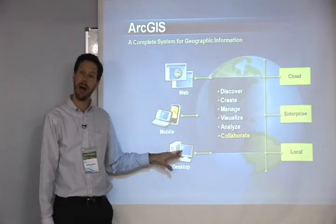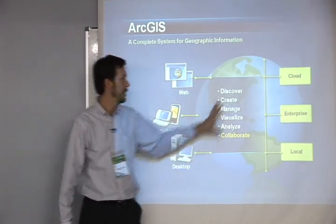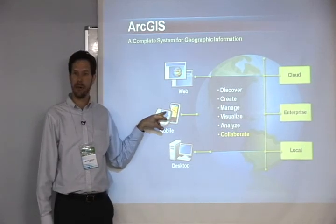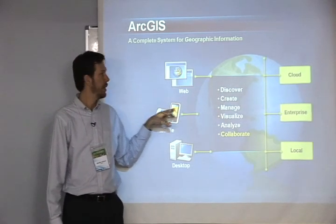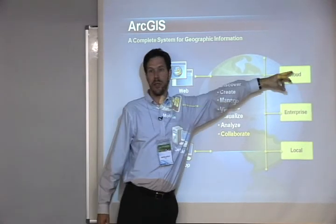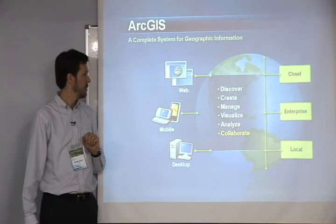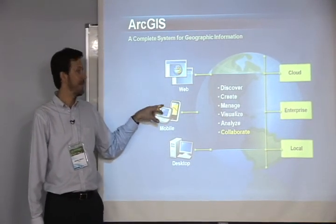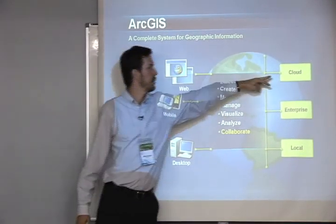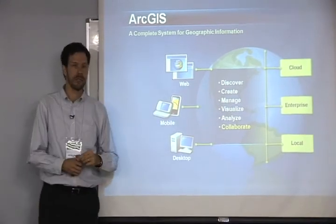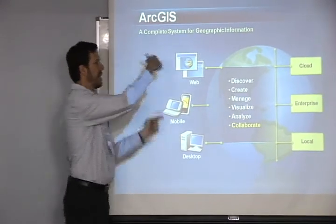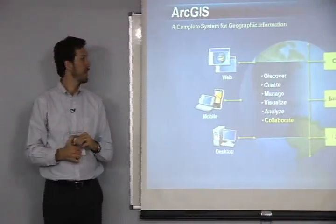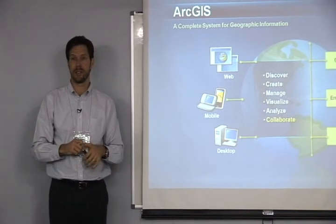We can publish our data to the cloud, and someone else immediately from their cell phone or their iPhone can get access to that data. Or someone from the street can publish something and we can get access to it from somewhere else. So now there are many different combinations or permutations, and this is a new view of GIS.